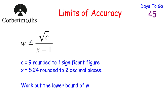Let's have a look at one last question. We have w equals the square root of c divided by (x minus 1). We're given that c equals 9 rounded to one significant figure, and x equals 5.24 rounded to two decimal places. We've been asked to work out the lower bound for w. Feel free to press pause and try this question yourself.